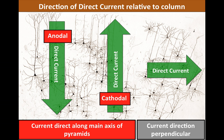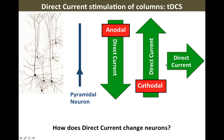We can think of different forms of direct current stimulation. First, the current can flow in different directions — from the top of the screen down, or from the bottom up. We call this anodal stimulation in one direction and cathodal stimulation in the other. This corresponds to anodal tDCS and cathodal tDCS respectively. The positive electrode, the anode, would be on top of the head in one case; the cathode would be on top in the other. We could also consider current flowing sideways, perpendicular to the primary axis of these cells.